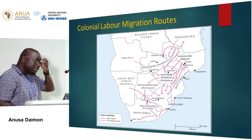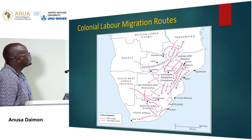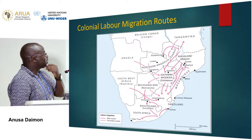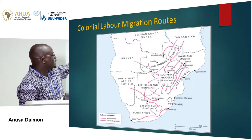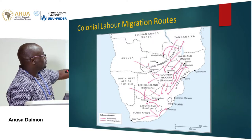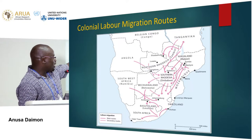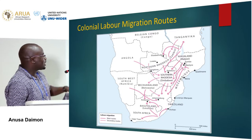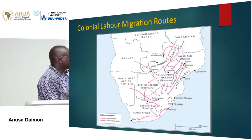This is a map of the routes that migrants would follow from the north, with the main labour pools or reservoirs being northern Rhodesia, Nyasaland, and Malawi. Most of them would pass through Mozambique, others through southern Rhodesia, and then down to South Africa. And there are reasons I explain why they would practice such a phenomenon.